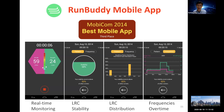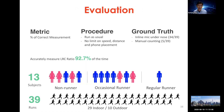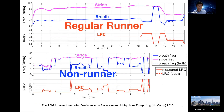We implemented this algorithm in an app and won an award at MobiCom a few years ago. To evaluate the system, we recruited 13 subjects for a total of almost 40 runs — some were non-runners who had never run, some ran occasionally, and one was a regular runner. For the regular runner, the LRC was very stable except for a short period where he stopped, and no matter how fast he ran, the LRC remained consistent. This confirms common knowledge. But for non-runners, the LRC values were all over the place. The next step was to develop a way for users to not only track their LRC but also actively coordinate their breathing with their steps.